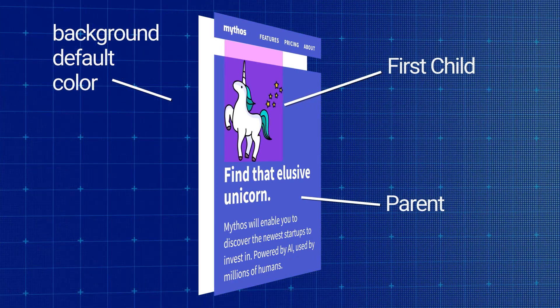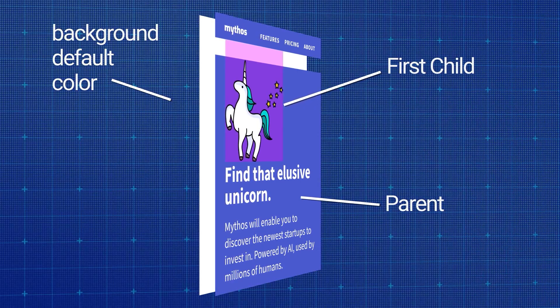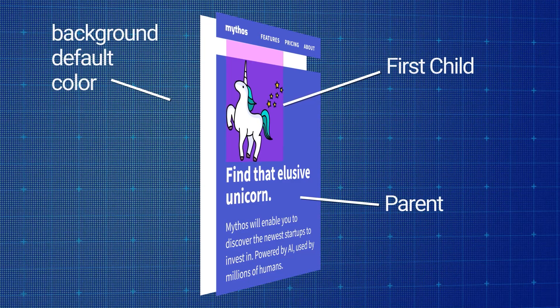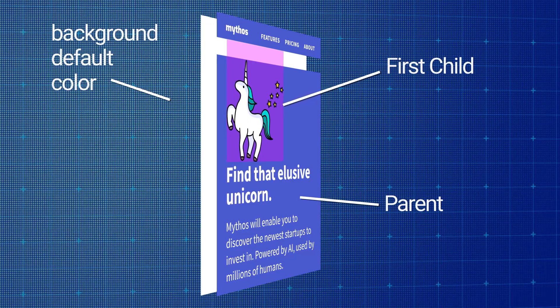In order to prevent margins from collapsing, we have to explicitly add styles to prevent it from happening. In our current situation, we need to create a new block formatting context on the parent of the unicorn image.